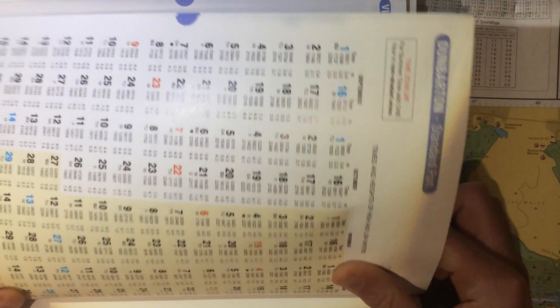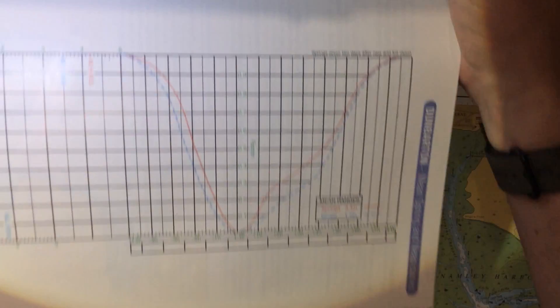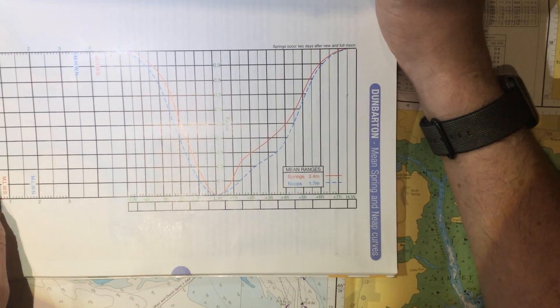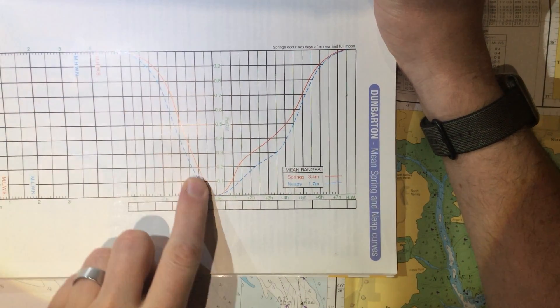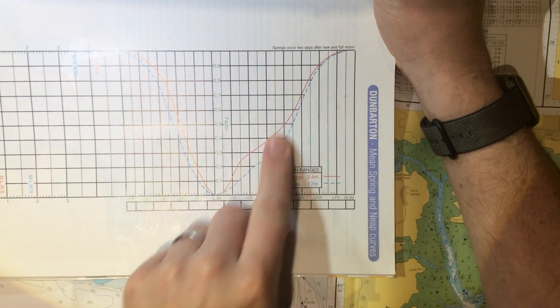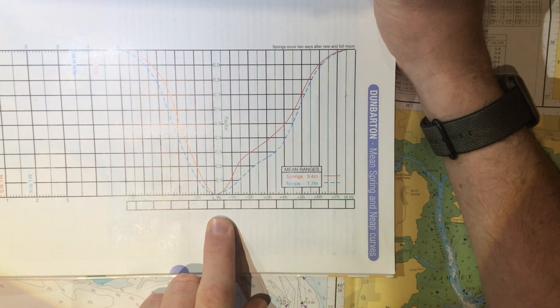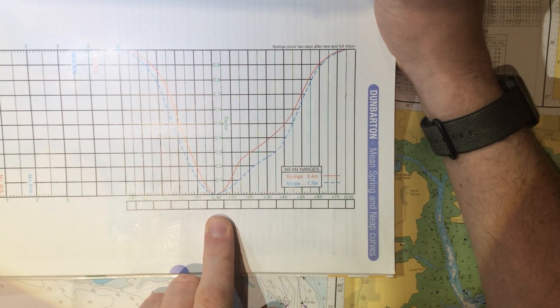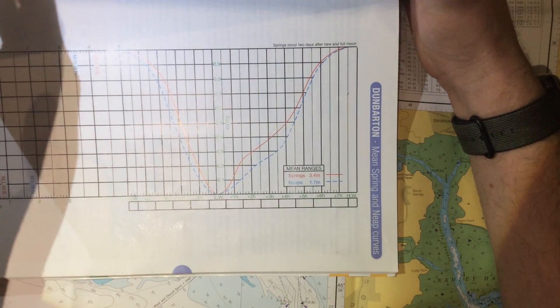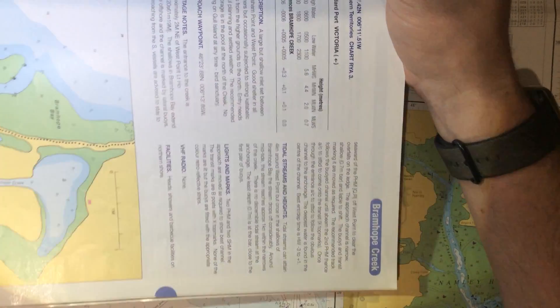It's not always the case and in the training almanac, if you turn to look at Dumbarton, you can see that this one's the other way around with low water in the middle. The curve's the other way around and you'll see it refers to low water. This is relatively rare but it's worth looking out for as the calculation or the method is slightly different.